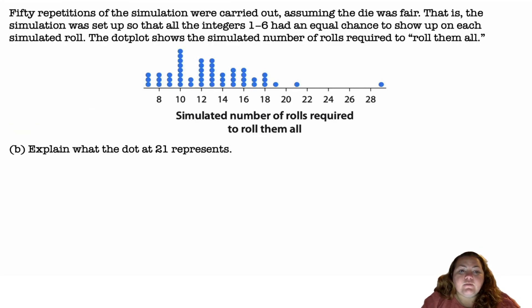50 repetitions of the simulation were carried out assuming the die was fair. That is, the simulation was set up so that all the integers one through six had an equal chance to show up on each simulated roll. The dot plot shows the simulated number of rolls required to roll them all. We did this many, many times and this is what we got. This simulation is this dot plot.